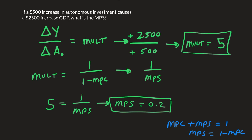If you need to do the algebra out, that's perfectly fine. Multiplying both sides, we get 5 times MPS equals 1, or MPS equals 1 fifth, which is equal to 0.2.